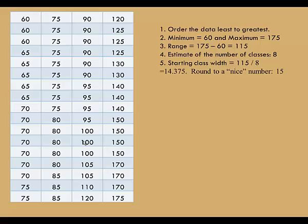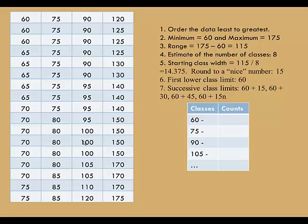To get an estimate of class width, I'll start by dividing the range by the number of classes. When I divide 115 by 8, I get 14.375. I'm going to round this to what I consider to be a nice number, 15. The minimum in this data set is 60. That's a nice even number and I'm going to use that as my first lower class limit. To get successive class limits, I'll keep adding multiples of 15. So after 60, the next would be 75, then 90, then 105.